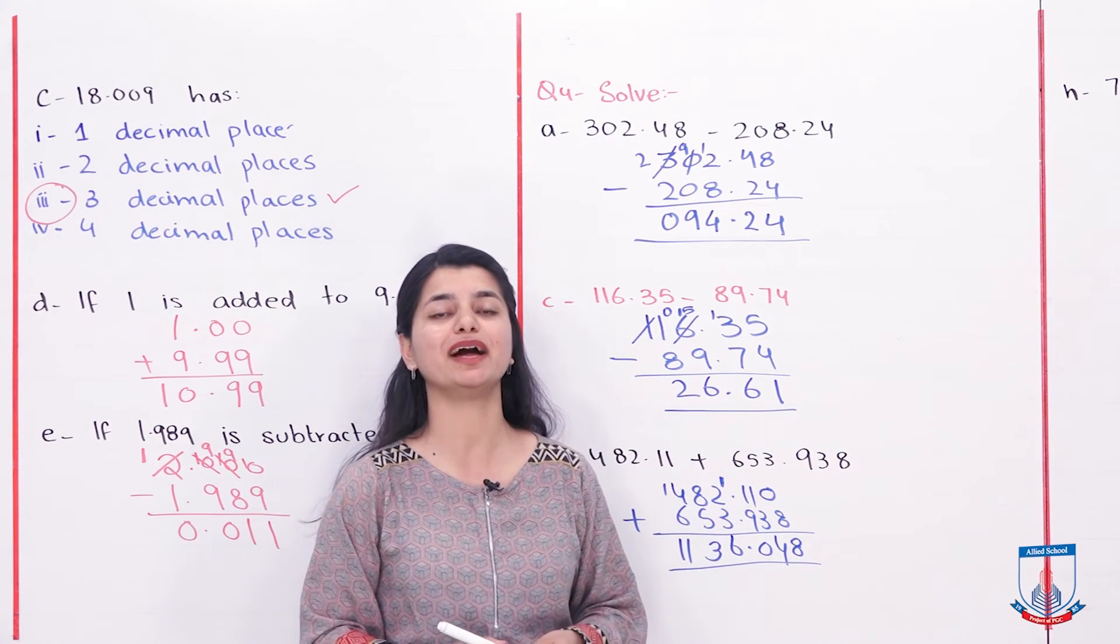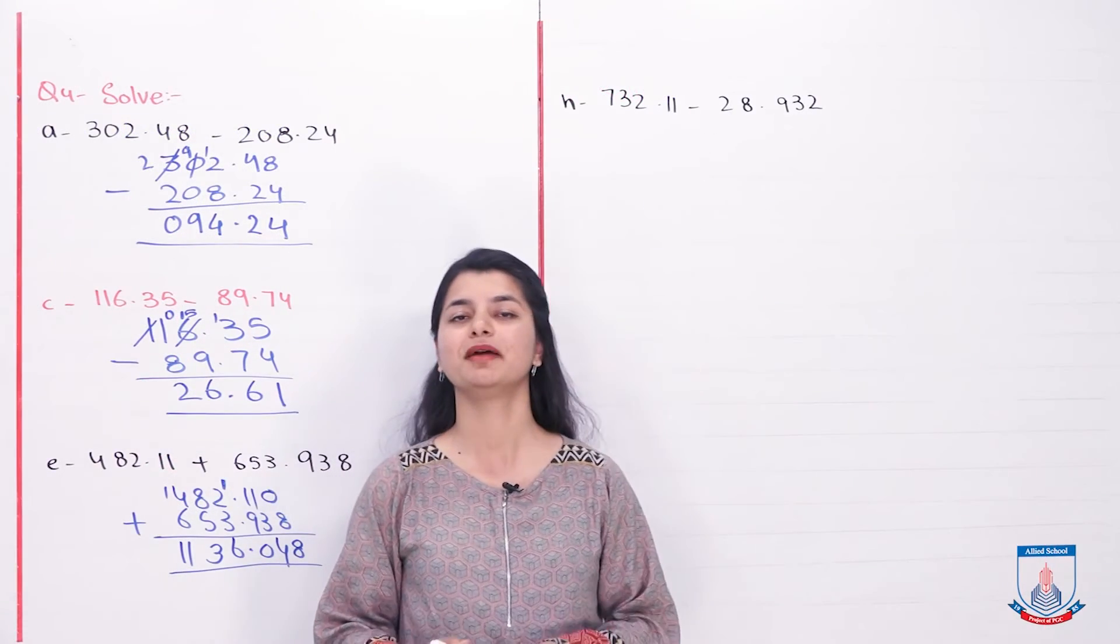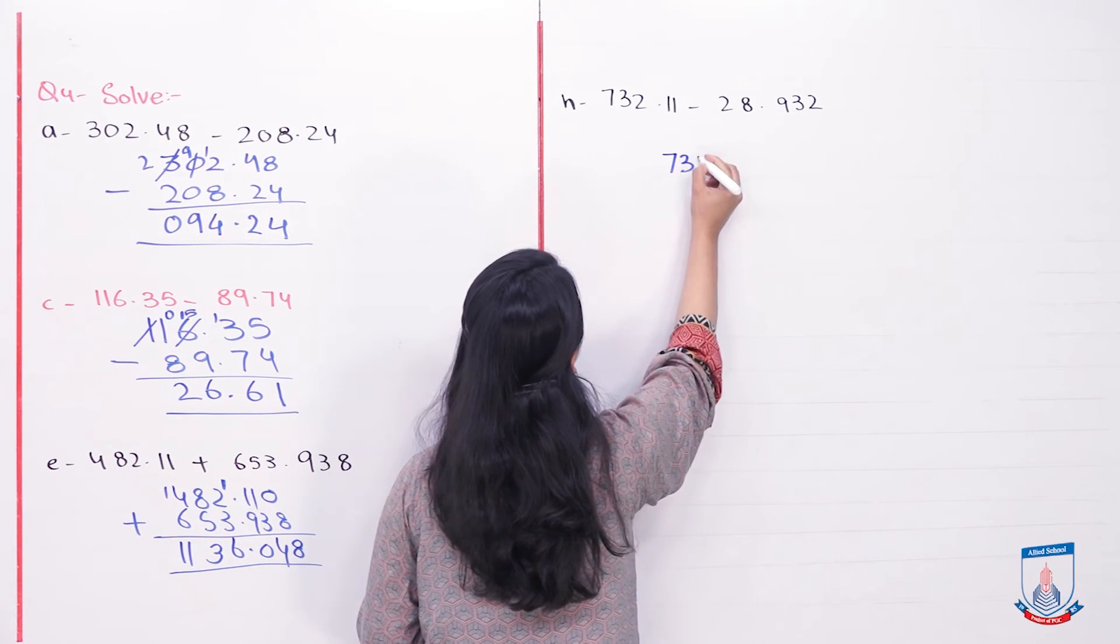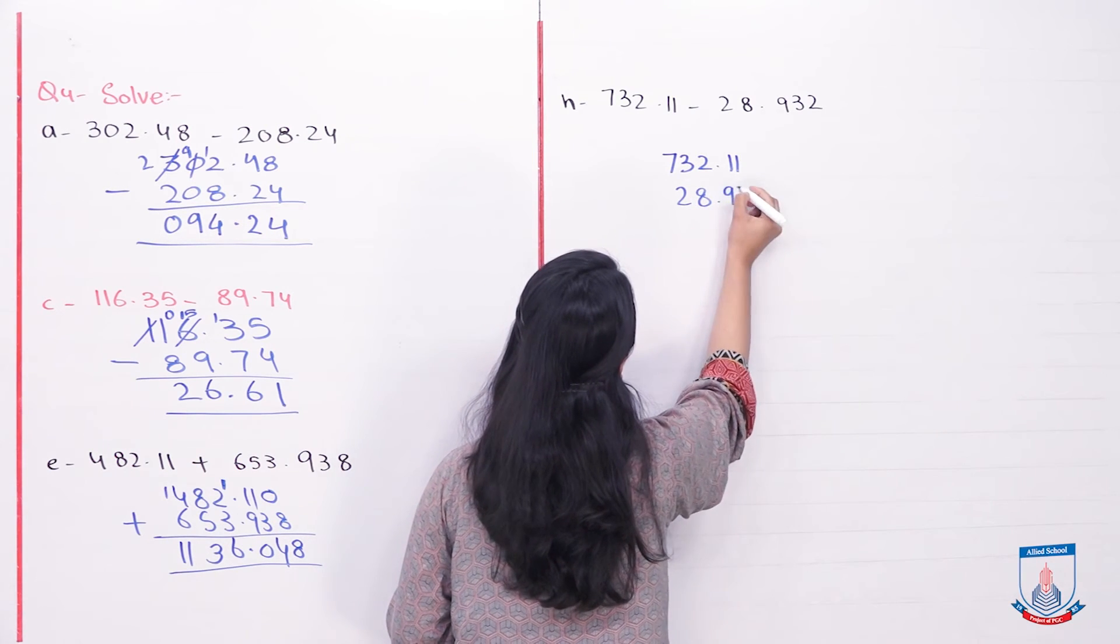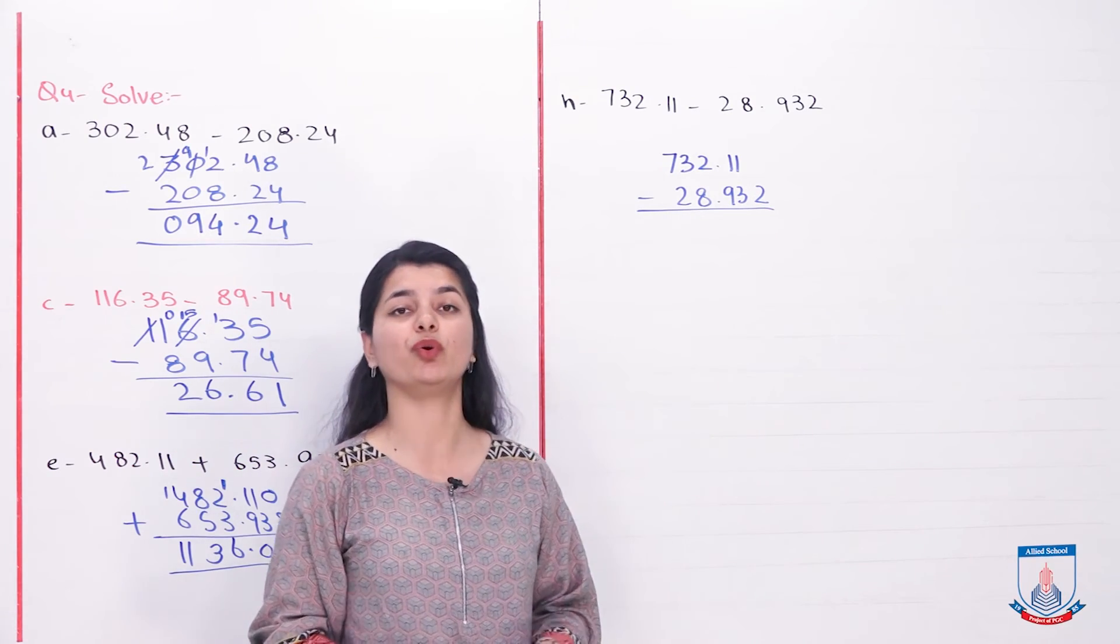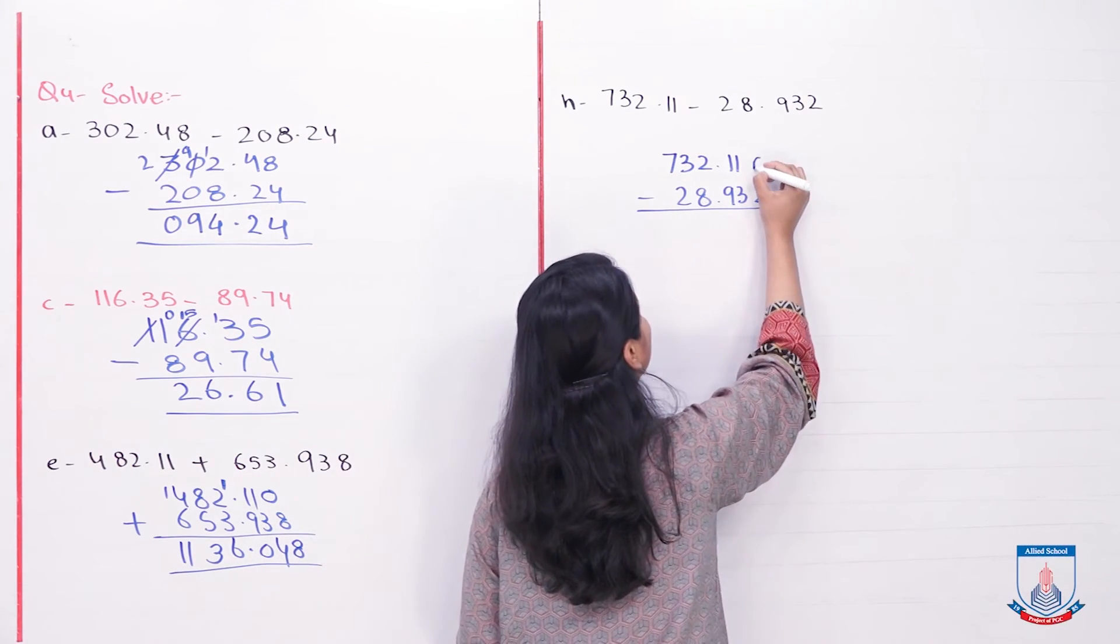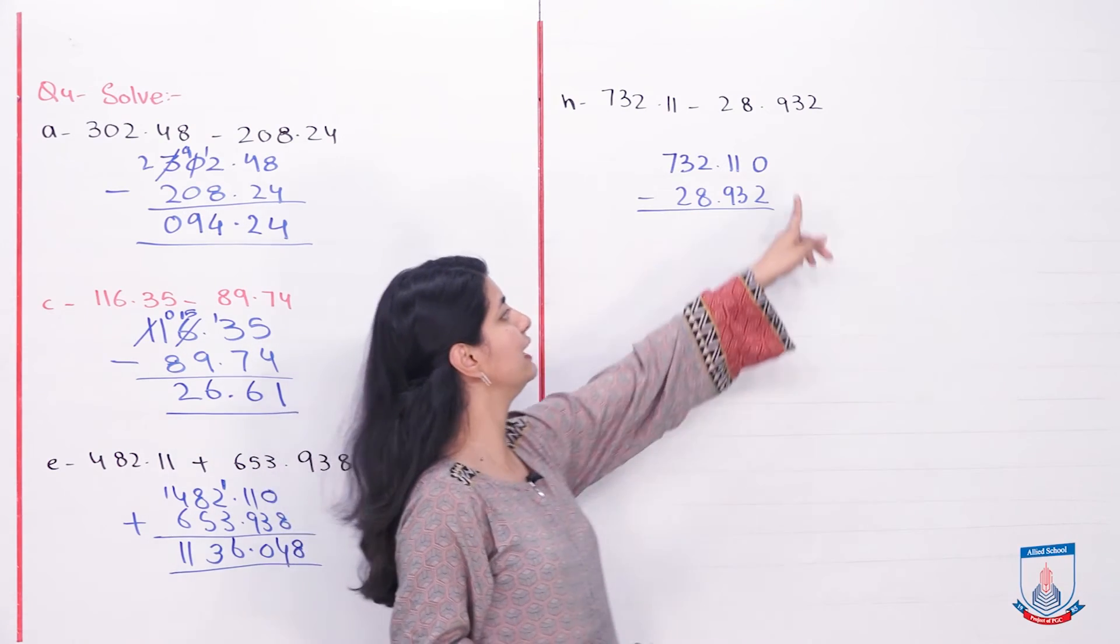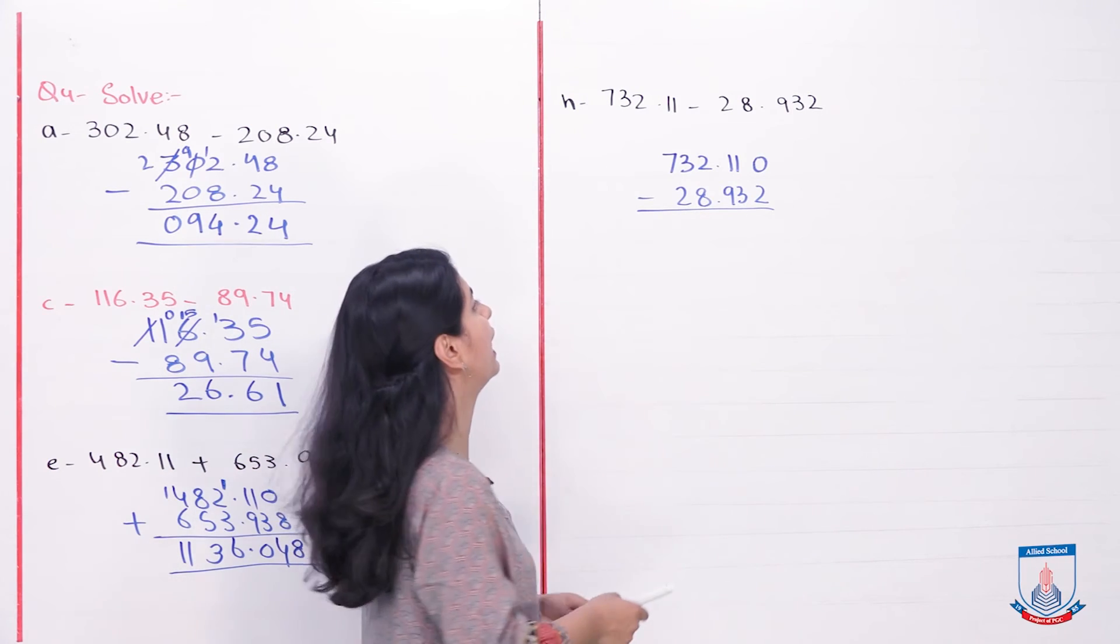Now let's go and see part H, the last question of this exercise. Part H: 732.11 minus 28.932. Are these like decimals? No. One has 2 decimal places, one has 3. What will we do? We will put 0 here. We will make like decimals. Now we can subtract this. But from 0 to 2, these numbers are small. So what do we have to do? We have to borrow.